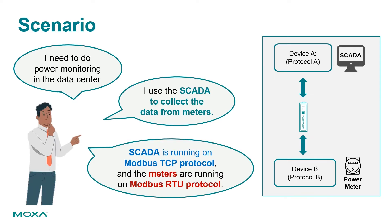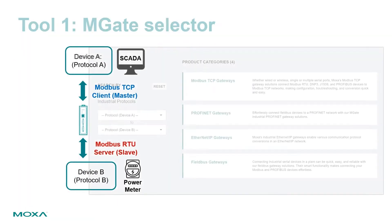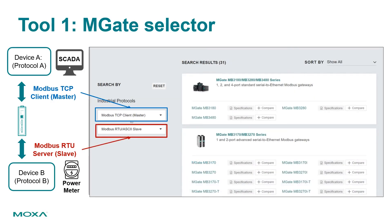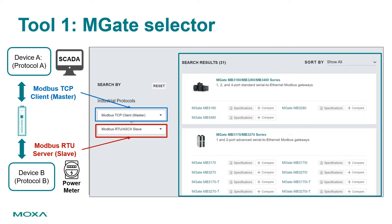SCADA is running on Modbus TCP protocol and the meters are running on Modbus RTU protocol. When using the online M-Gate selector, select Modbus TCP client in the field of device A, and select Modbus RTU server in the field of device B. Finally, check the search results to find suitable M-Gate models.